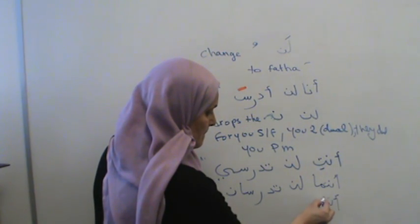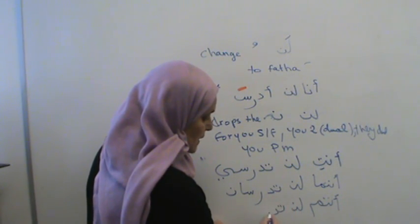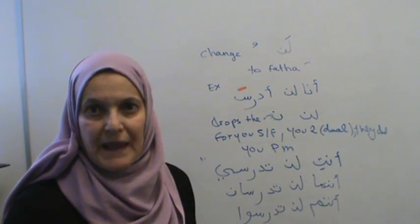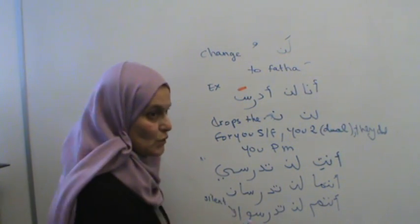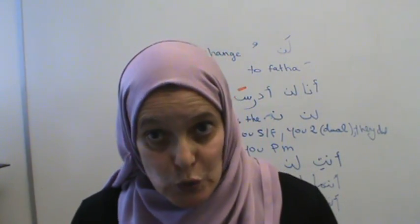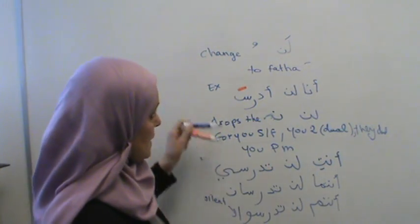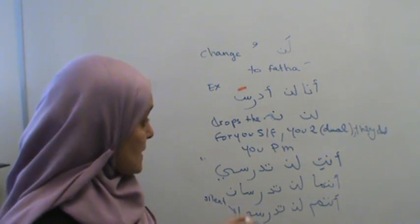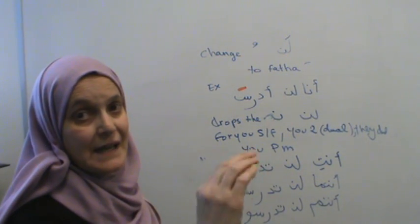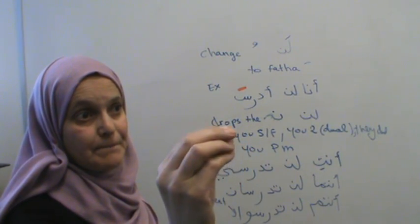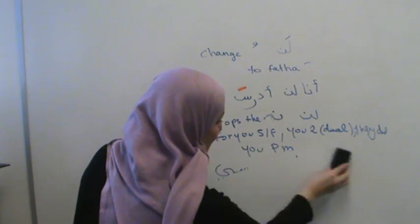For example: 'entom len tedrusu.' Normally we say 'entom tedrusun,' but when negating in the future, you say 'entom len tedrusu' — the noon changes to an elif that is silent when spoken. This is the negation in the future tense. Remember: I am not conjugating the verb in the future tense, because 'len' itself already means 'will not.'